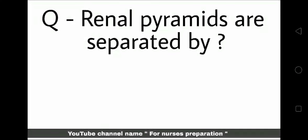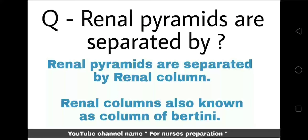Next important question: Renal pyramids are separated by what? Renal pyramids are separated by renal columns. Renal columns are also known as the columns of Bertin.